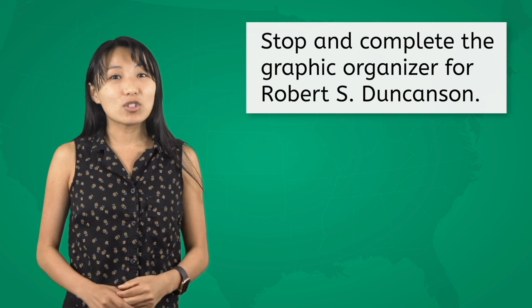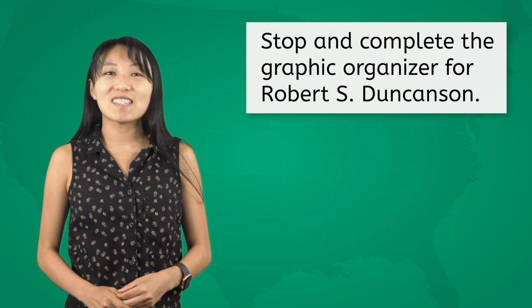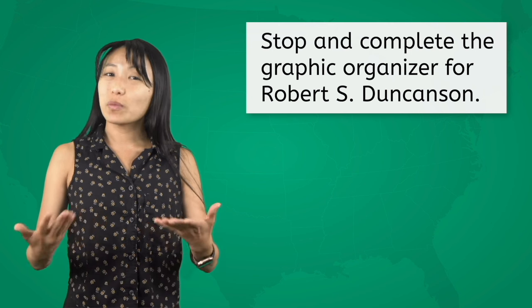Although Duncanson didn't address his own racial identity or the political discourse around slavery in his work, some historians argue that this art — with its themes of freedom, peace, and appreciation for nature — was a form of resistance and optimism during turbulent times. Let's stop and complete your graphic organizer for Robert S. Duncanson before we move on.